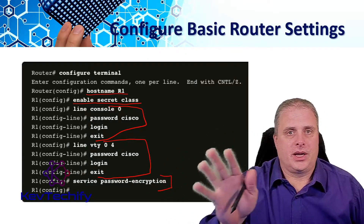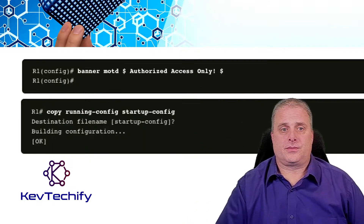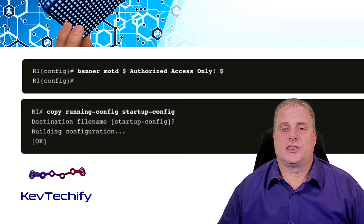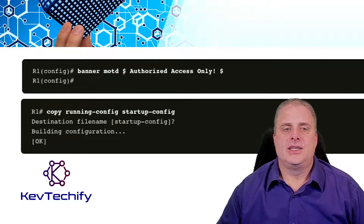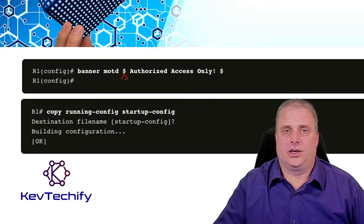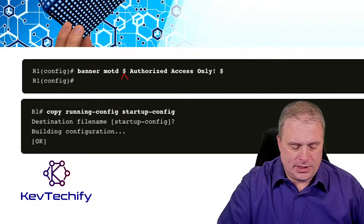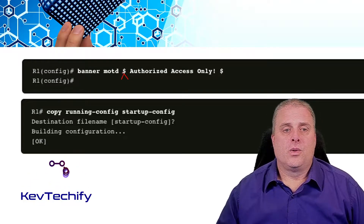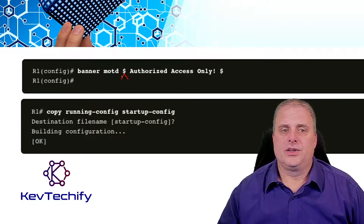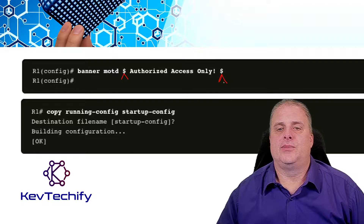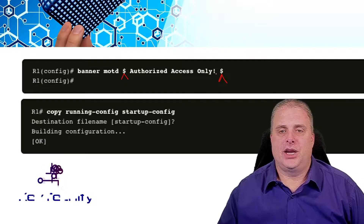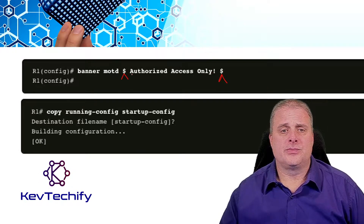These are the same as on a switch — some of the commands and processes are the same for our initial configuration. We also set up a banner message of the day; here we're saying 'authorized access only.' That banner message of the day needs to start with a delimiter, a special character — that's up to you. A lot of times it's the shift and number keys. I typically use a dollar sign. Once you start with a delimiter, it has to end with that same delimiter, so choose a delimiter that's not in your message. If we're going to use an exclamation mark, we couldn't put that in our message.